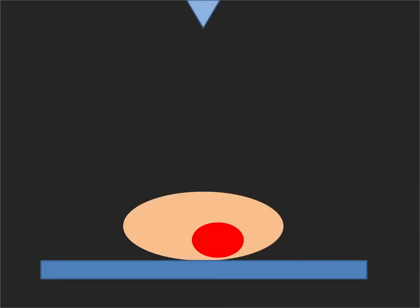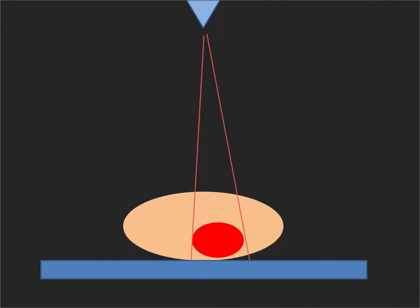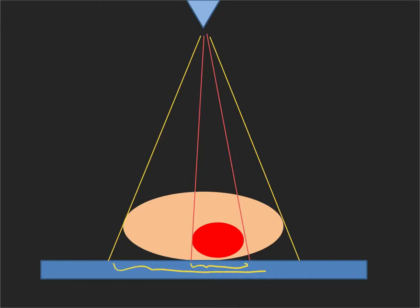Let's look at the effect of a PA versus an AP chest x-ray. Here is our image receptor, our patient, and here is the heart. In a PA chest x-ray, the patient is facing the image receptor. What I'm showing here is how the heart is going to project onto the image receptor, and the ratio of heart projection to thorax projection.